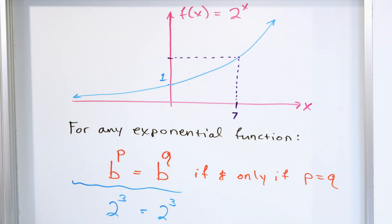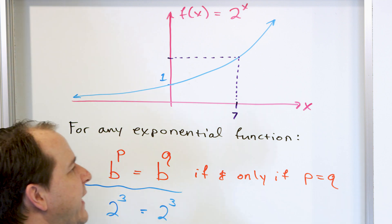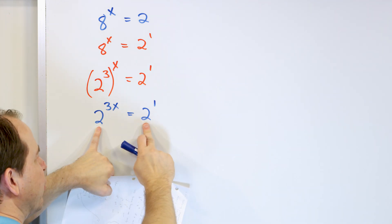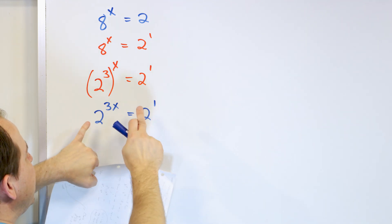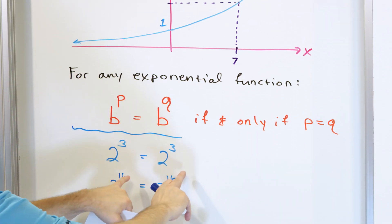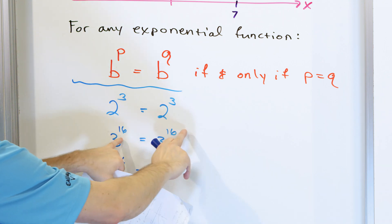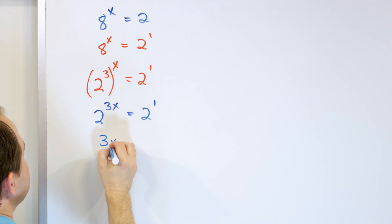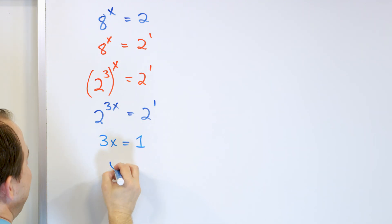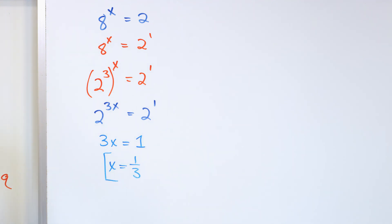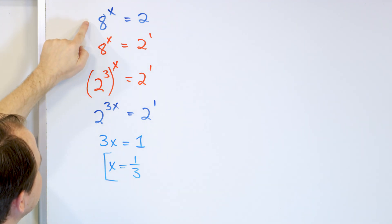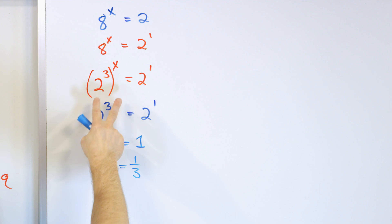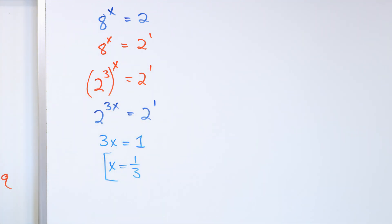Now you see: if we have an exponential on one side with base two, and another exponential on the other side with the same base, the only way these are equal is if the exponents are also equal. So we set 3x equal to one, which means x equals one-third. This is the answer you would circle on your paper.